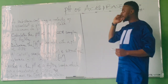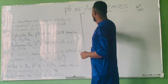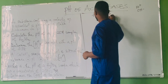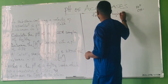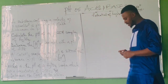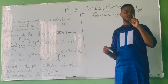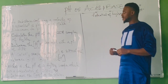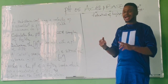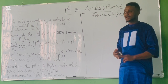Basically, we have what we call pH. pH is called the potential of hydrogen. That's what pH means — potential of hydrogen. It is a scale that helps in the determination of the acidic level, the basic level, or the neutral level of a substance.